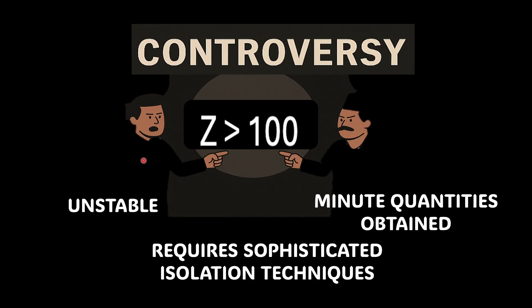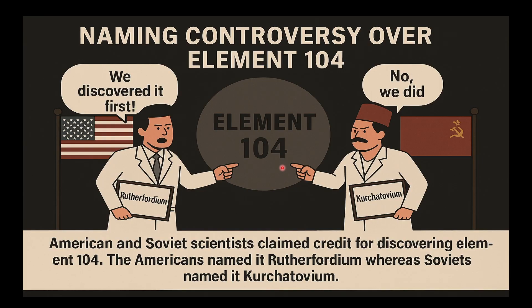Scientists, before collecting the reliable data on the new element, at times get tempted to claim for its discovery. Like what happened in this case of element 104 where Americans and Soviet scientists claimed credit for discovering the element 104. The Americans named it Rutherfordium whereas Soviets named it Kurchatovium. Finally, the name that has been retained is Rutherfordium only.